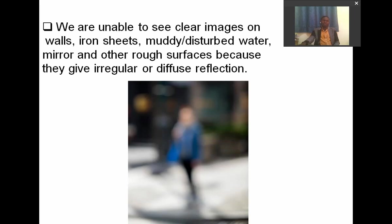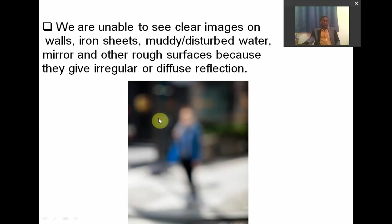Let's look at this picture here. This is a diffused picture — an image formed due to diffuse reflection — and you can see it is not clear. When diffusion takes place in reflection, it forms an unclear image.